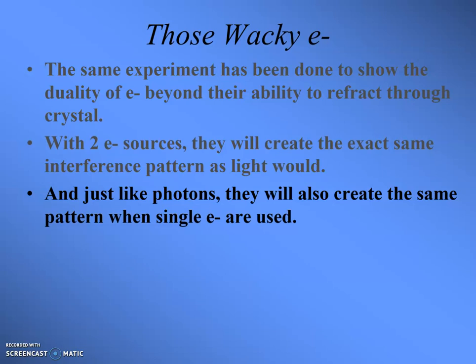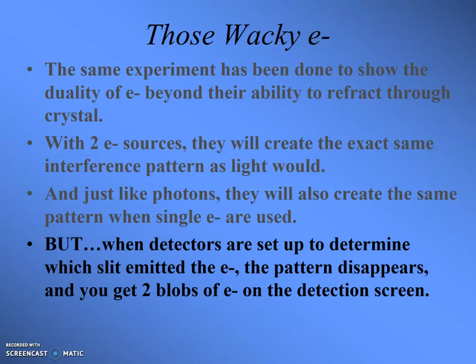What's also really cool is when detectors are set up to determine which slit the electron came through, the interference pattern will actually disappear and you get two blobs of electrons. They set up detectors so they know whether the electron went through the left hole or the right hole. But when you set up those detectors, you know the electron's position at some point — so it acts like a particle, not a wave — and it goes straight through like a bullet and hits the screen. You get two blobs instead of an interference pattern, one for each hole. Really, really strange.